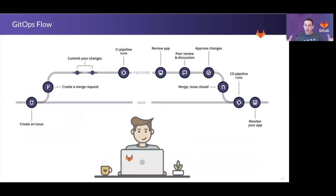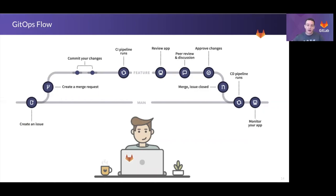The GitOps flow ends up looking very similar to a software development flow. You create an issue — for example, we need to expand the number of nodes in our node pool, or lessen resources for a particular service to save on cost, or investigate because something went down. Based on that defined problem, you create a merge request with a branch, run the automation, and when it's merged back into master, you have your running production environment.